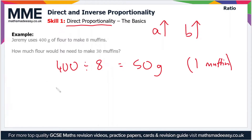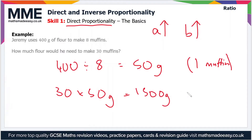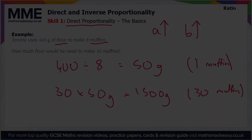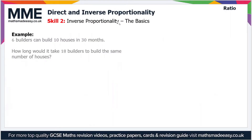Now when we scale this up to 30 muffins, we just multiply 30 by 50 grams, which gives us 1500 grams of flour for the 30 muffins. So in this case, the amount of flour you need is directly proportional to the number of muffins you have.